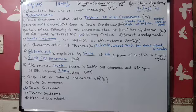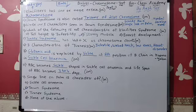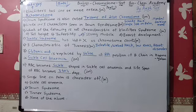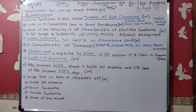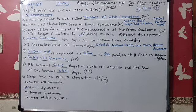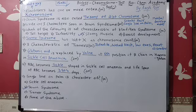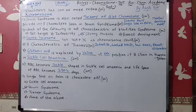Number six: In sickle cell anemia, glutamic acid is replaced by valine at the sixth position in the beta chain of hemoglobin. This is sickle cell anemia. Half mark each. RBCs become sickle-shaped in sickle cell anemia. The normal lifespan of RBCs is 120 days, but sickle cell RBCs only last 3 to 4 days.